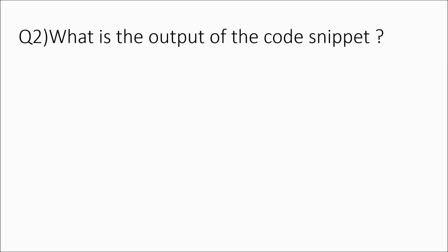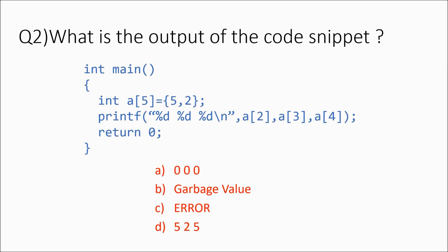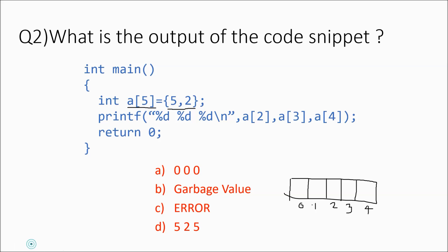The next question: what is the output of this code snippet? The first line declares an integer array of size 5. Let's visualize it — indices 0, 1, 2, 3, and 4. We initialize it with {5, 2}, so 5 is stored at index 0 and 2 at index 1. Now what happens when you print a[2], a[3], and a[4]?